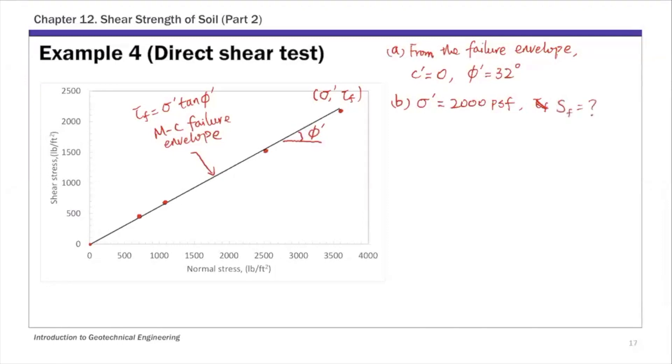To do this we first need to find the shear stress at failure, then multiply that by cross-sectional area to get the force. Simply plug into the failure criterion, Mohr-Coulomb failure criteria, at 32 degrees, which we just found from part a. That's the phi prime angle, and this is sigma prime. Given this normal stress we can calculate the shear stress at failure.